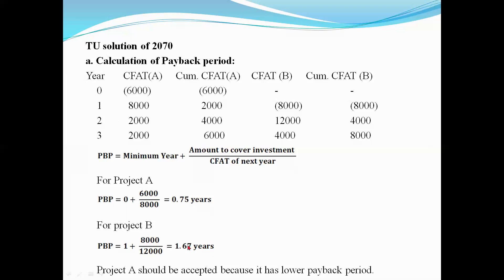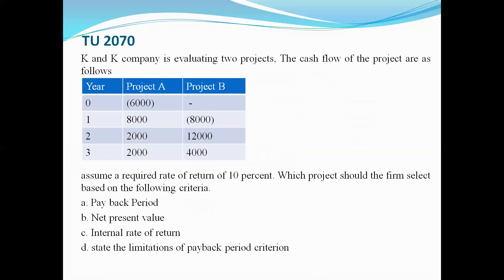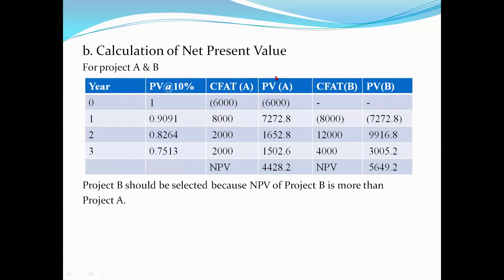Now let's compare using the payback period. If you have a payback period, then you can select the project. We need to compute the NPV. The capital is 10%, so the PV interest factors are: year 1 at 10% is 0.9091, year 2 at 10% is 0.8264, year 3 at 10% factor is 0.7513.